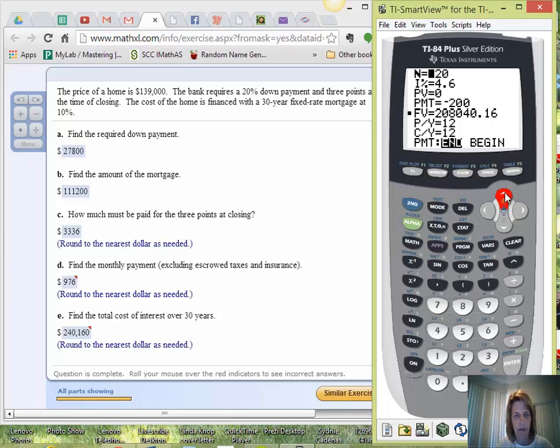or I'm sorry, not a down payment, but a 30-year loan. So we have 30 times 12, which would be 360.